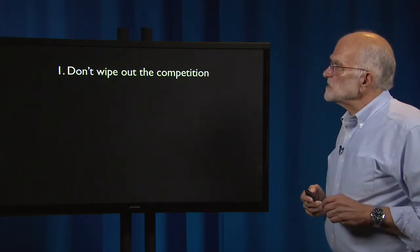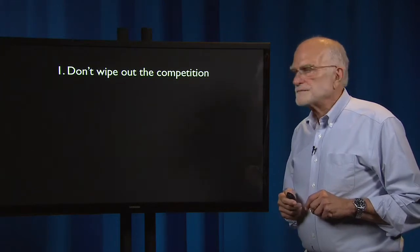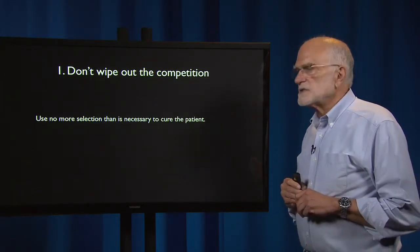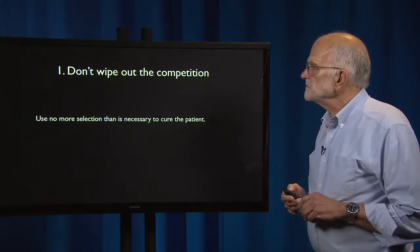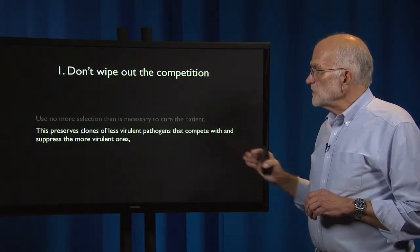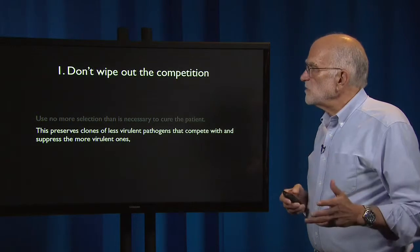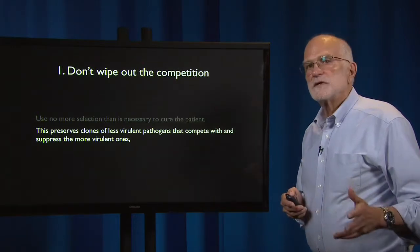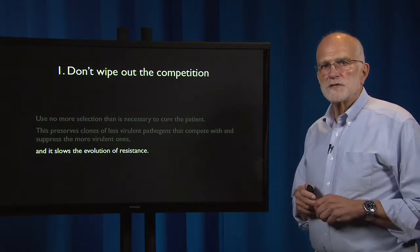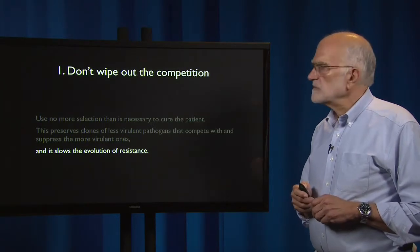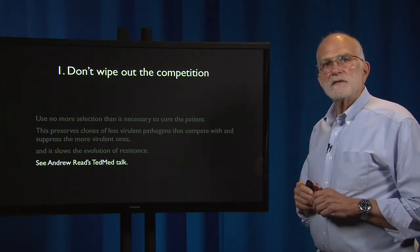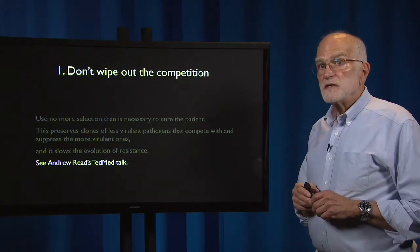The first idea is: don't wipe out the competition. Use no more selection than is necessary to cure the patient. This preserves clones of less virulent pathogens that then compete with and suppress the more virulent ones, and it slows down the evolution of resistance. Andrew Reid gave a great TED Med talk on this — you can find it easily online.